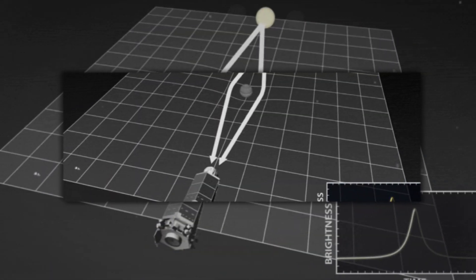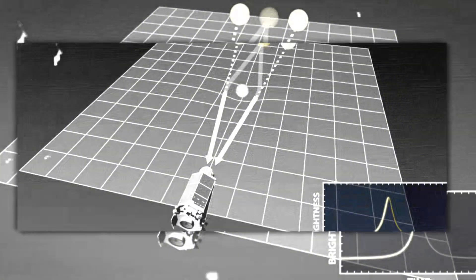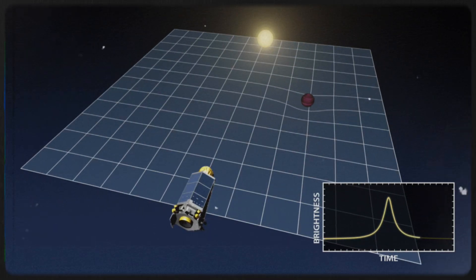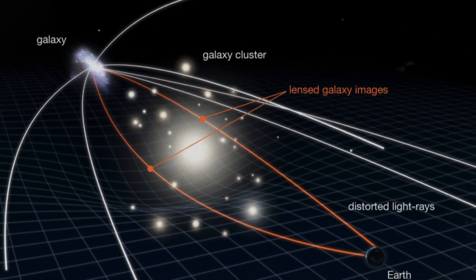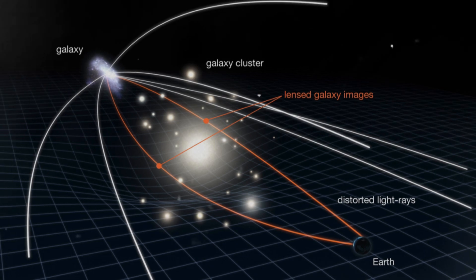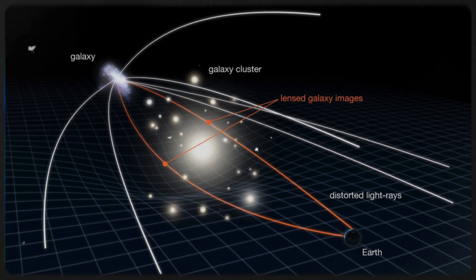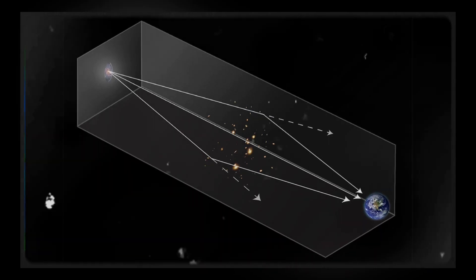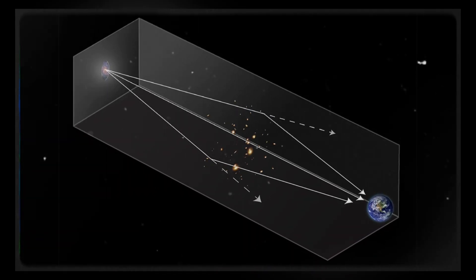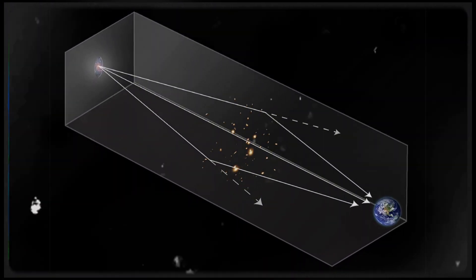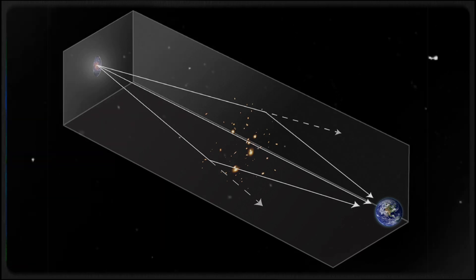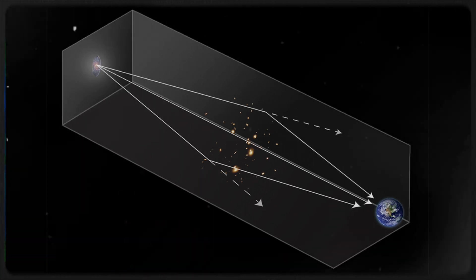A gravitational lens occurs when the immense gravitational force of a massive object, such as a galaxy cluster, warps the very fabric of space-time. This warping acts like a gigantic magnifying glass, bending and amplifying light from distant objects that lie far behind the massive foreground object. In this case, the gravitational lens brought Eärendel into sharp focus, isolating it from the surrounding light of its home galaxy and allowing astronomers to observe this single ancient star, a feat that would otherwise be impossible.